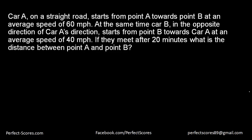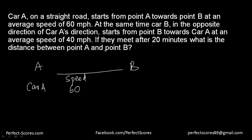Car A on a straight road travels from point A towards point B at an average speed of 60 km per hour. At the same time, car B starts from point B towards car A in the opposite direction at an average speed of 40 km per hour. They meet after 20 minutes. What is the distance between point A and point B? Let's suppose they meet at a certain point between A and B.